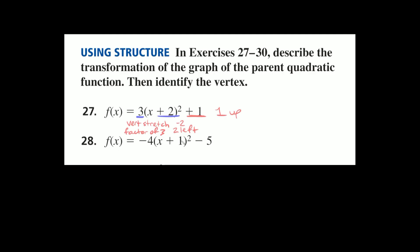Problem 28: f of x equals negative 4, times x plus 1, in parentheses, squared minus 5. The 4 is vertical and bigger than 1, so that's a vertical stretch by a factor of 4. The plus 1 inside becomes minus 1 — one spot to the left. The minus 5 at the end means 5 spaces down. Since we have a negative sign out in front, not inside any parentheses, we're also reflecting the entire parabola over the x-axis.